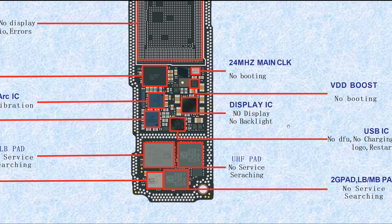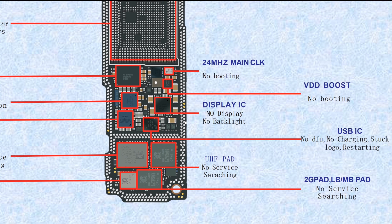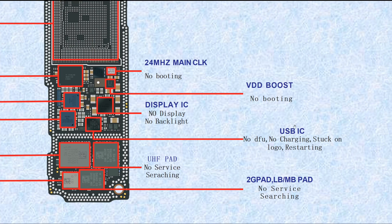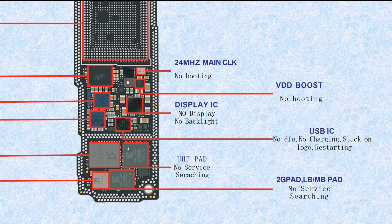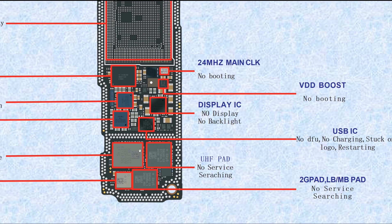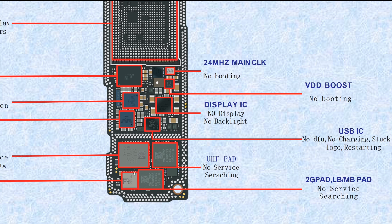This display IC — if broken, it causes no display, no backlight. This USB IC — if broken, it causes no DFU, no charging, stuck on logo, or restarting. This one is UHFPA — U-H-F-P-A — D power amplifier. UHF means ultra high frequency. If broken, it causes no service or searching.